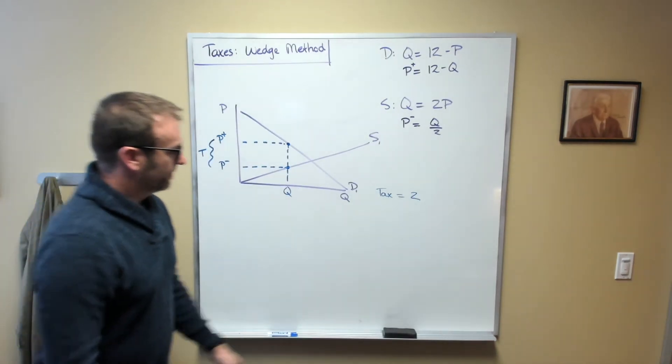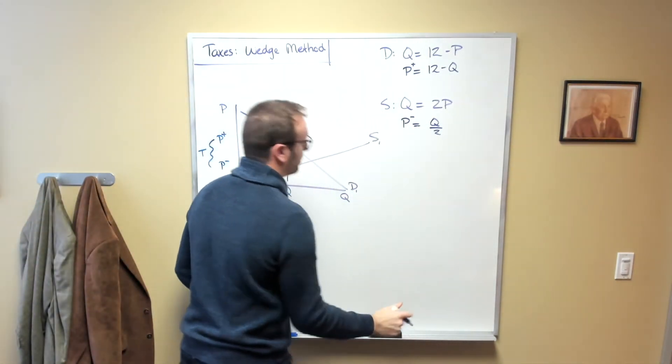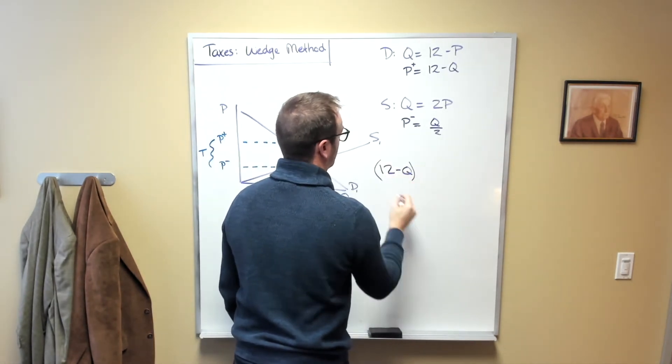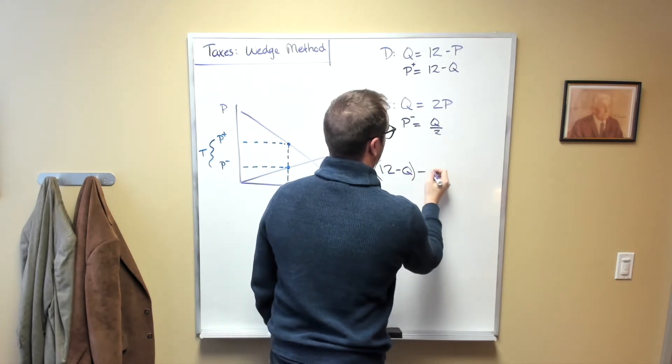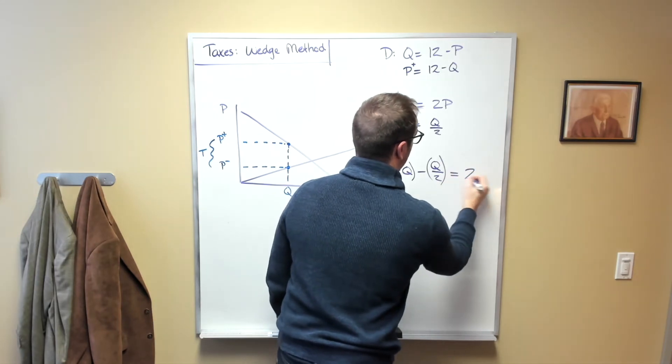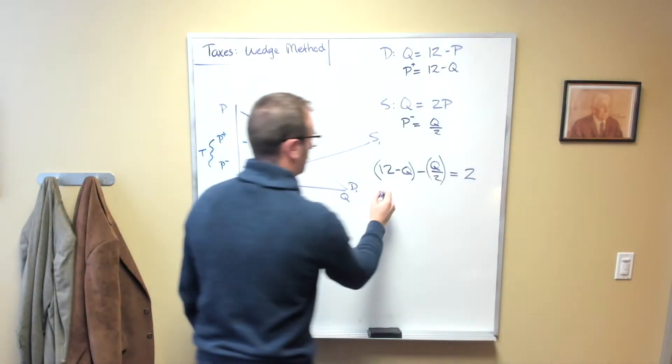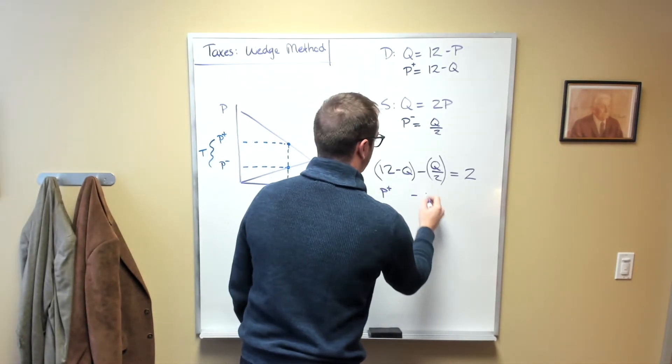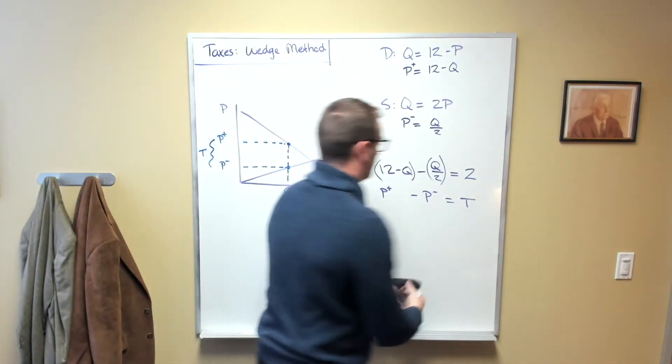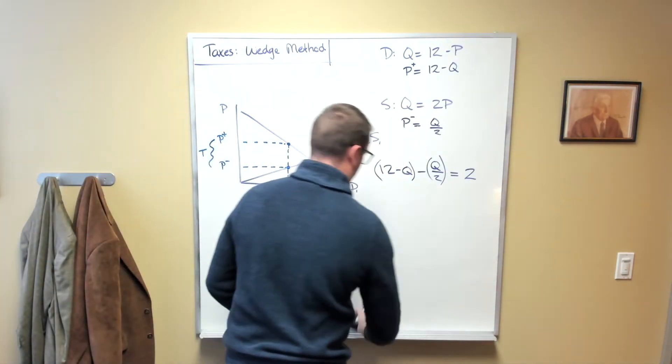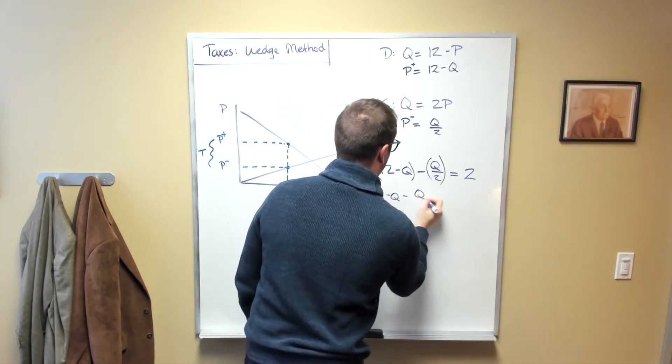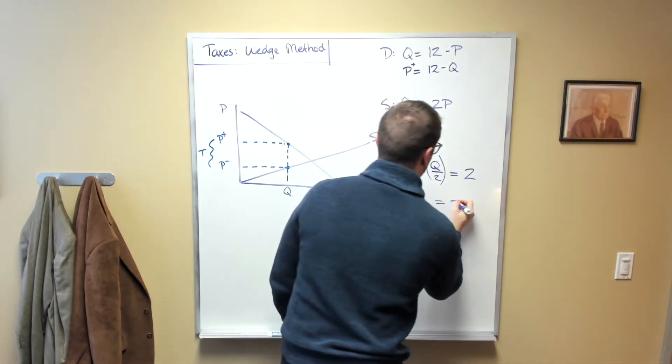And so now what I know, because the tax is 2, what I can therefore say is that 12 minus Q minus Q over 2 has to be equal to 2. In other words, P plus minus P minus is equal to tax. And we can simplify this and just say 12 minus Q minus Q over 2 has to be equal to 2.